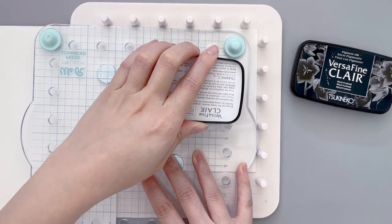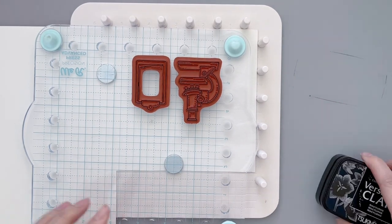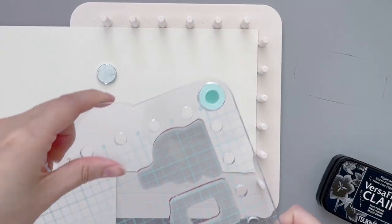I started out by stamping some images onto watercolor paper. Today I chose some really cool images from this stamp set called It's a Science.